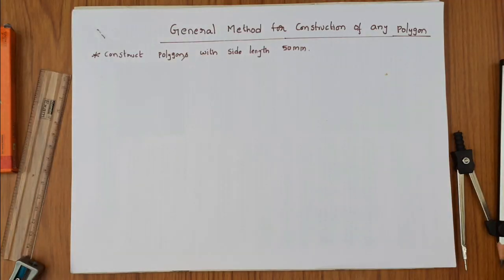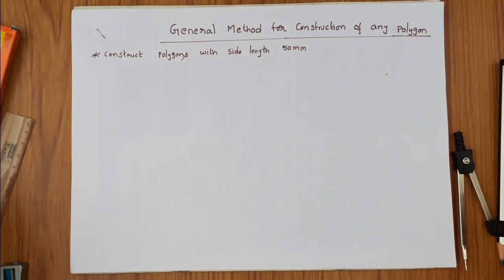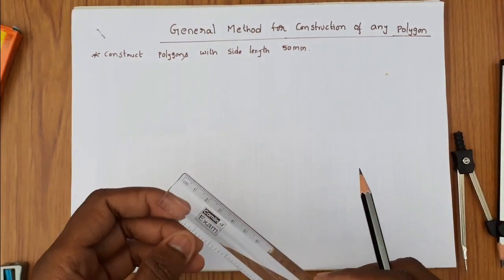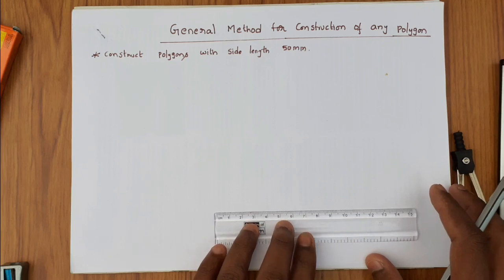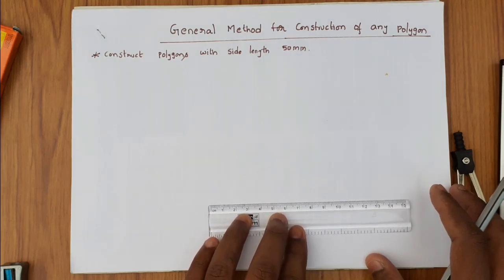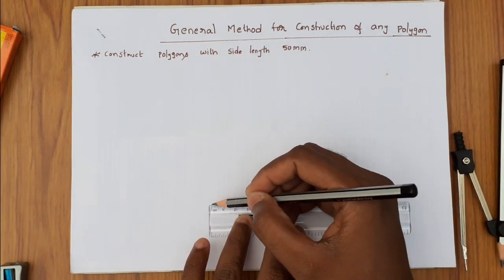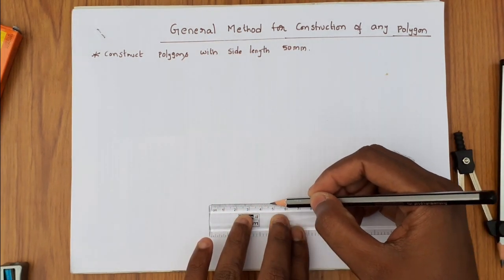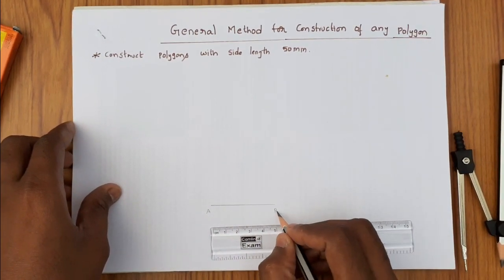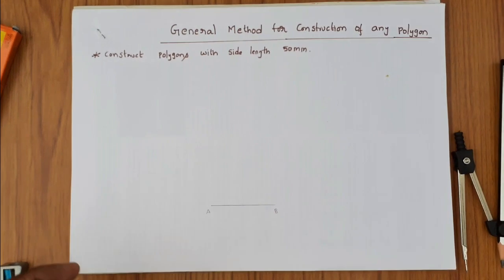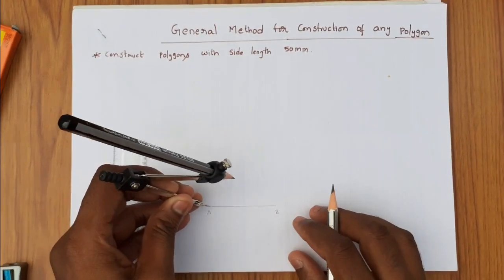This is a general method for the construction of any polygon. We will construct a polygon with side length 50 mm. Initially, draw a line AB with 50 mm and mark the length A to B.